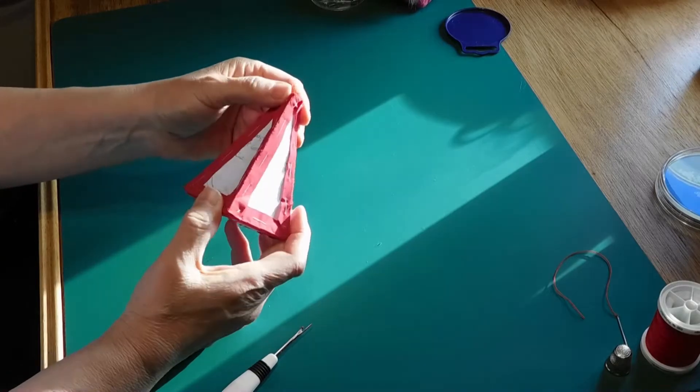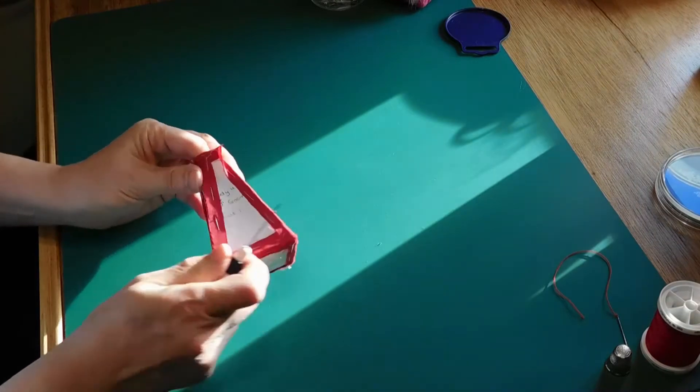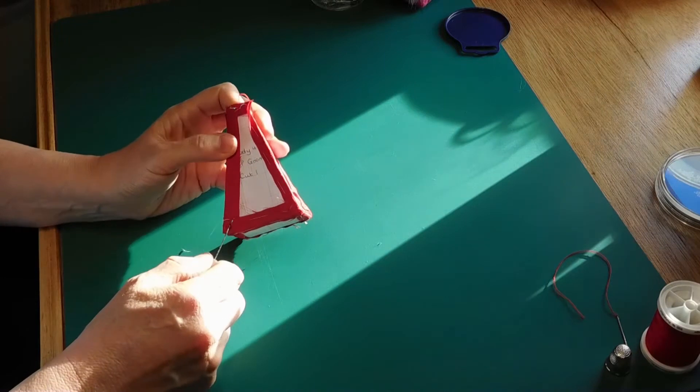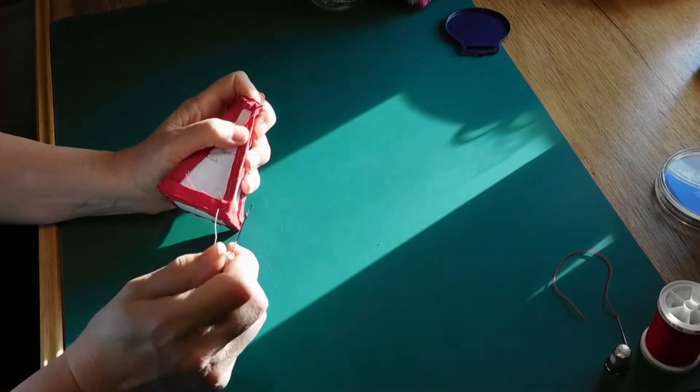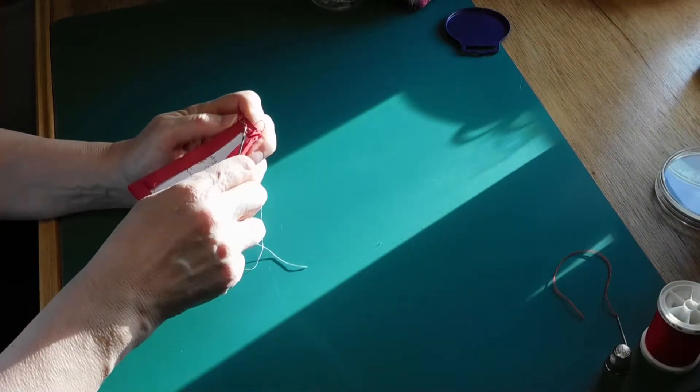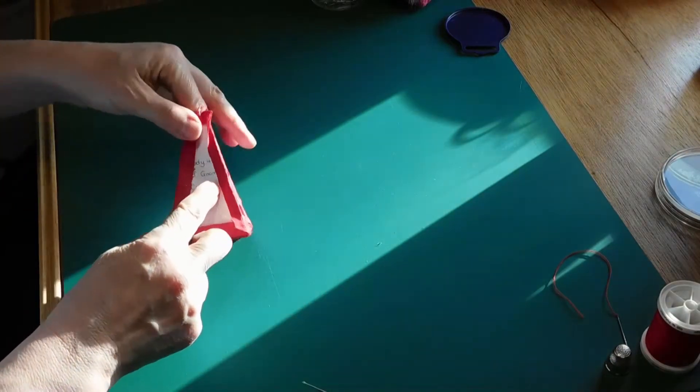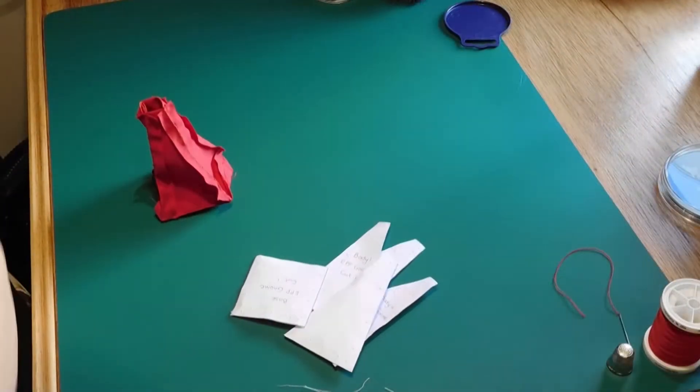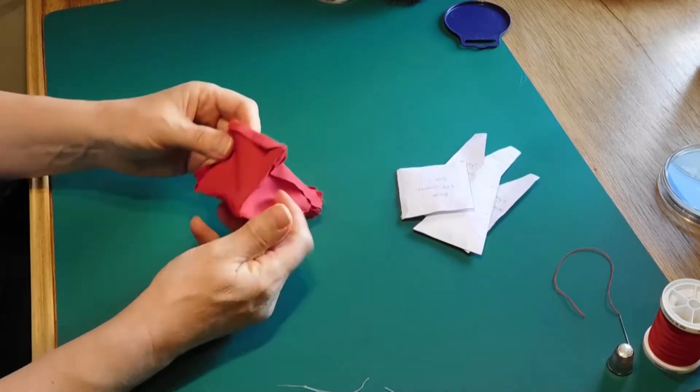When all four sides are fixed together, using a stitch unpicker, remove the tacking stitches. This will release the card inside so that it can be removed. When all five pieces have been separated from the fabric, turn the shape inside out.